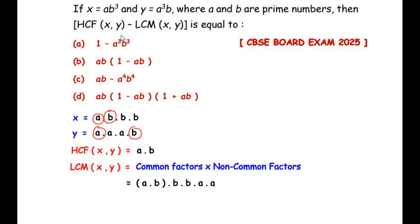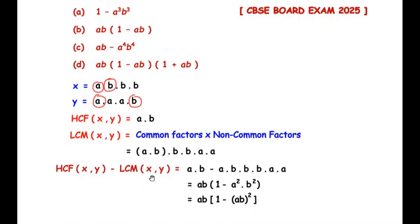Now let us focus on the given expression, that is HCF minus LCM. HCF of x and y we got as a times b, minus the LCM terms. In the next step we take out the common factors from these two. Here a is a common factor between HCF and LCM, and b is also a common factor. So we take a and b out. From the first term, since ab is taken out as a common factor, 1 is left. So in the bracket we have 1 minus a squared times b squared.